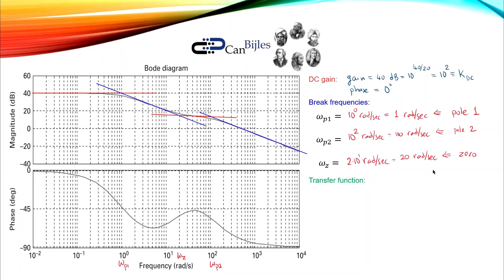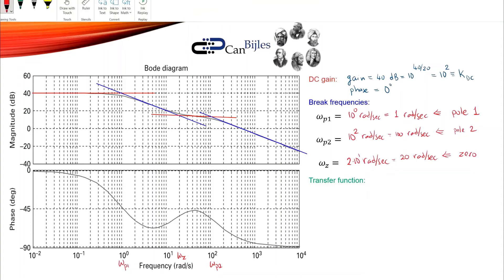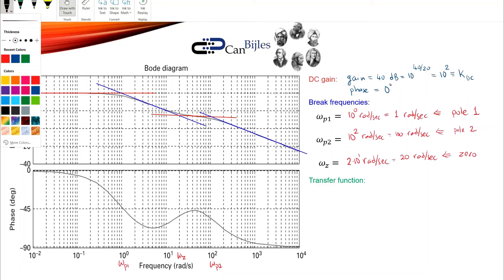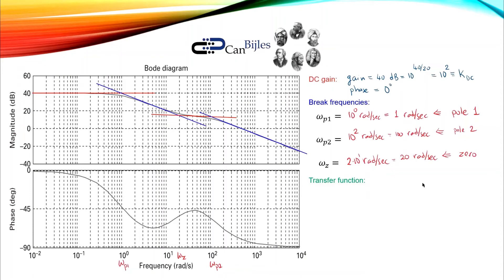Now I can set up the transfer function by substituting the values for DC gain, pole 1, pole 2, and the zero. The general form is G(s) = KDC times the numerator zero terms over the denominator pole terms. So G(s) = 10^2 times (s/omega_z + 1) divided by (s/omega_p1 + 1)(s/omega_p2 + 1), which gives 10^2 times (s/20 + 1) divided by (s/1 + 1)(s/100 + 1).